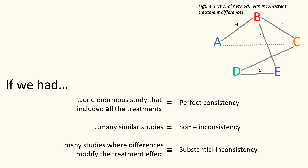The true treatment effects that we would see in a large study that included all the treatments must be consistent. However, the evidence that we have may not be consistent for a variety of reasons. Inconsistency can arise when there are differences between studies that may change the relative treatment effects. For example, treatment B may have been given at a different dose in the A versus B study than in the B versus C study.